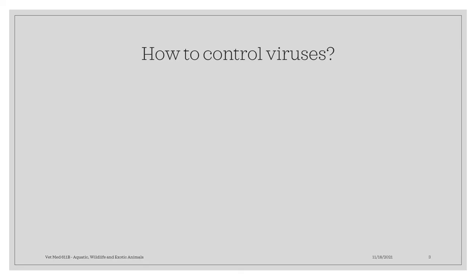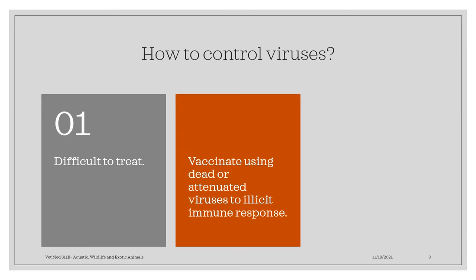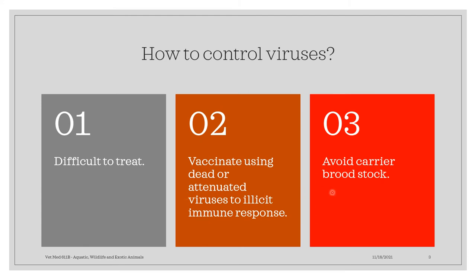How are we going to control viruses? Viral diseases are considered to be difficult to treat. In aquaculture, we can use vaccination as a means to control viral diseases. We are going to apply vaccination using dead or attenuated viruses to elicit an immune response. It is also important to avoid the carrier brood stock.